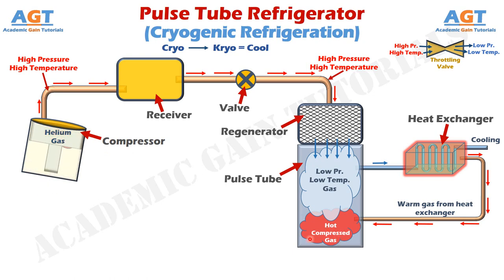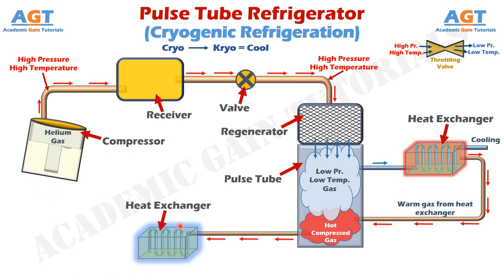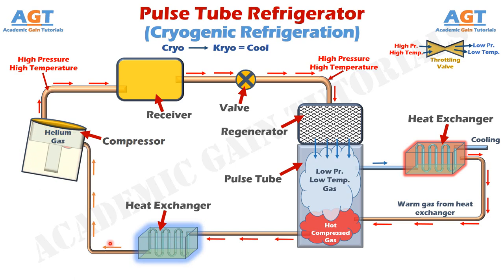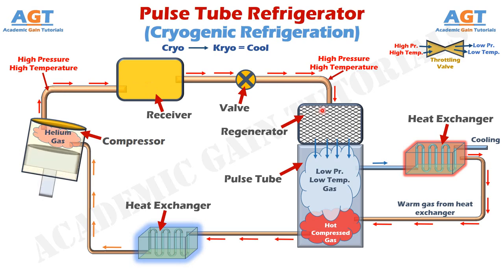After that, once again we will pass this high temperature gas through another heat exchanger. This heat exchanger can be either water cooled or air cooled, depending on specification and requirements. When this high temperature gas is given to this cold heat exchanger, it absorbs heat from the gas and cools down the gas as much as possible. Then we will pass this comparatively cool gas again to the compressor, which will further increase the pressure and temperature of the gas and pass it forward to the receiver, valve, regenerator, and so on — and thus the process will keep repeating continuously.